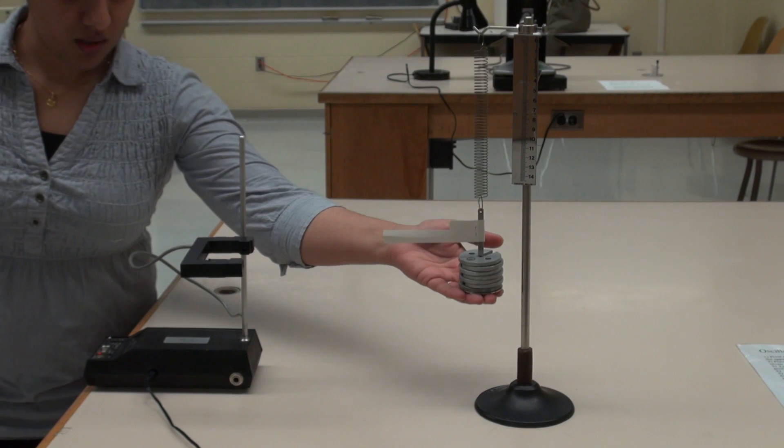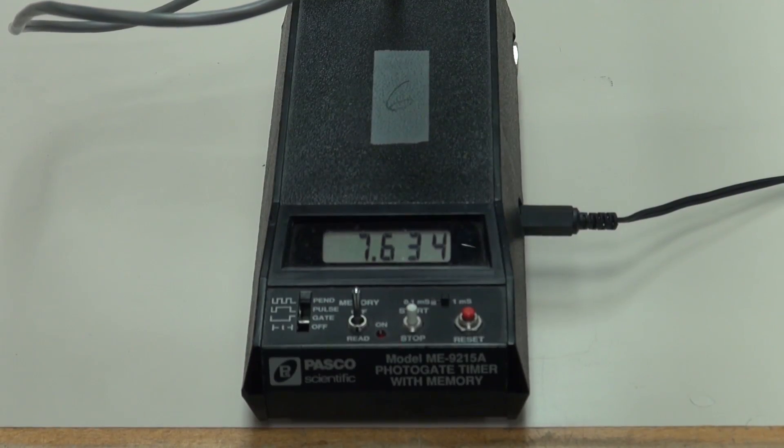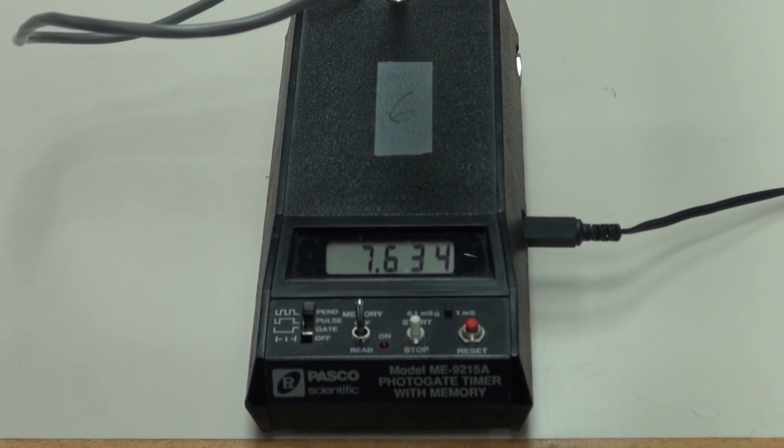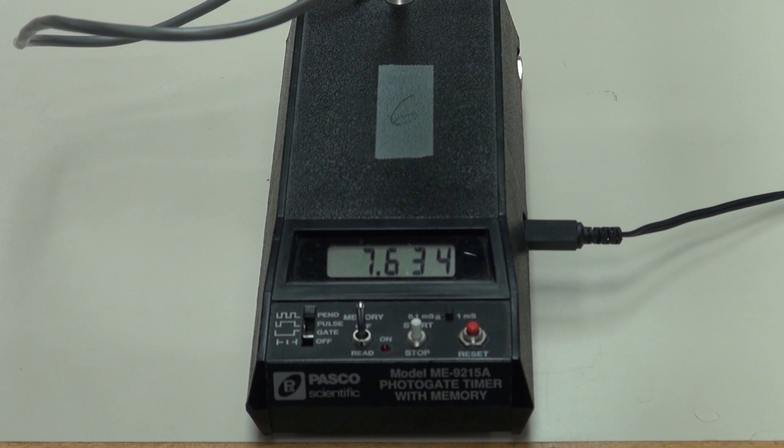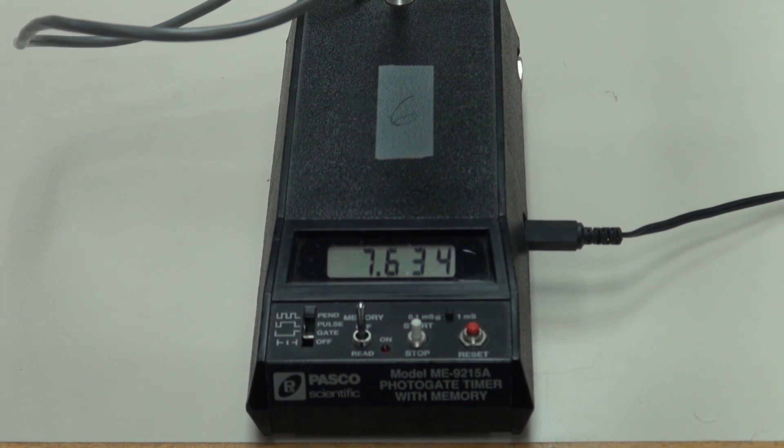In the actual experiment, you will measure the periods for masses of 350 gram, 300 gram, 250 gram, 200 gram and 150 gram.